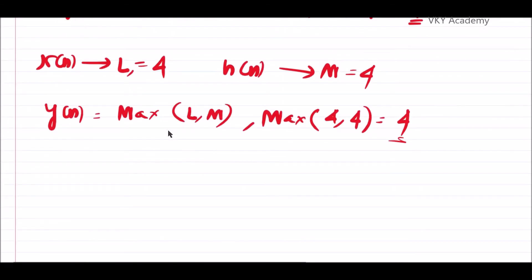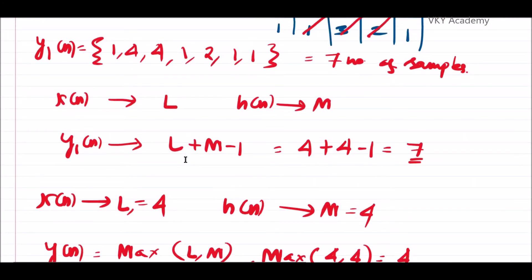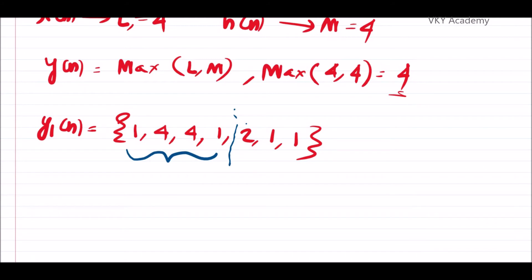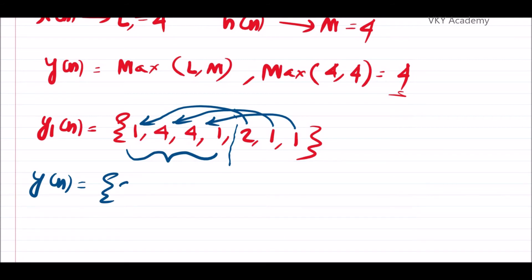Now let us see how to get y[n] from y1[n]. The linear convolution result y1[n] = {1, 4, 4, 1, 2, 1, 1}. Since the circular result must contain 4 samples, we preserve the first 4 samples: {1, 4, 4, 1}. The next sample (2) is added to the first sample, and the following sample (1) is added to the next. So y[n] = {1+2, 4+1, 4+1, 1} = {3, 5, 5, 1}.